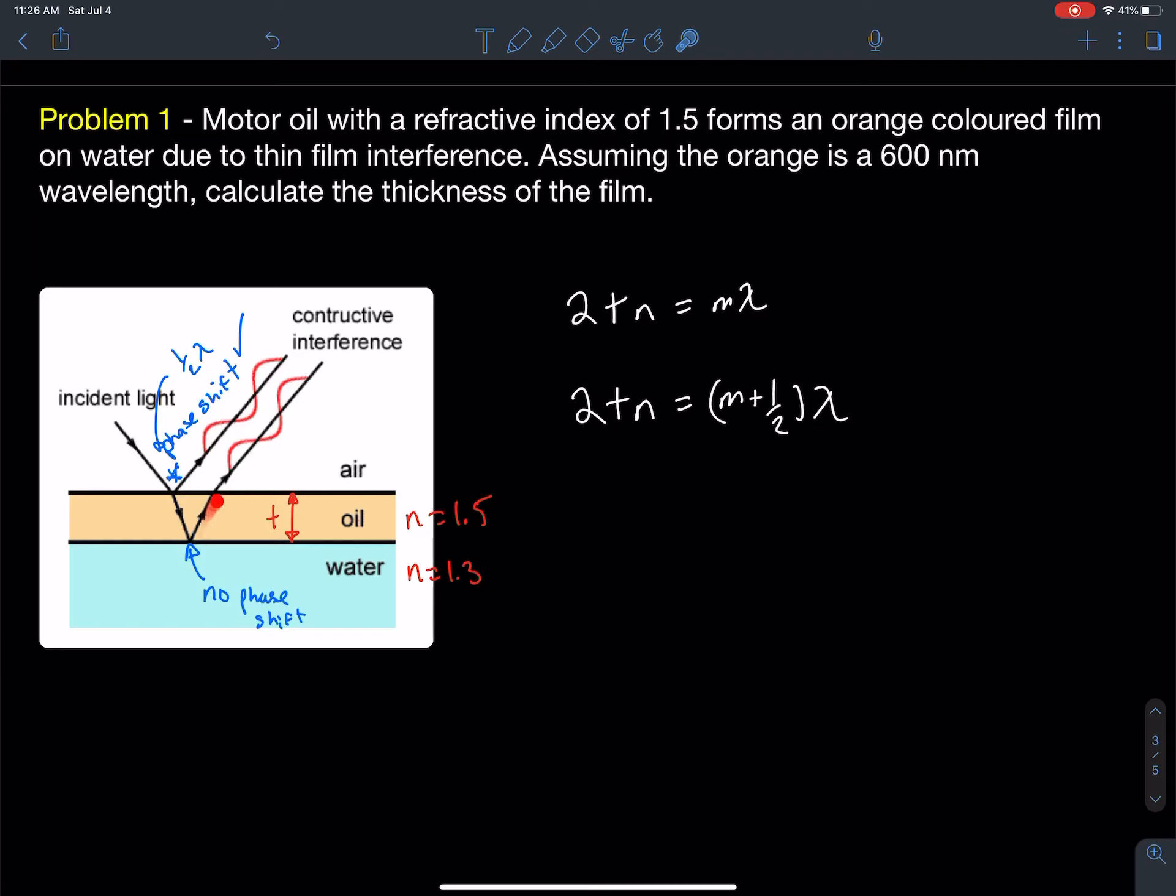Because of that extra half wavelength condition, that means that the formula that we're going to be using is going to be this one. Because this tells us that we have two times the thickness, so down and up. Two times the thickness times the refractive index will give me an order of half wavelengths difference. It'll be like five and a half or six and a half or seven and a half wavelengths that comes out in order to overlap with the original wave that reflected. So we have chosen this equation due to the phase shifts that occur. Hopefully that logic will be in play when you solve these problems.